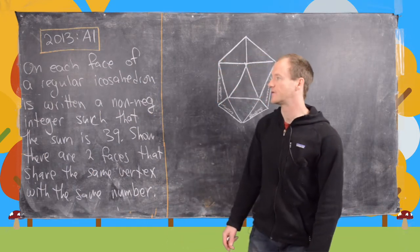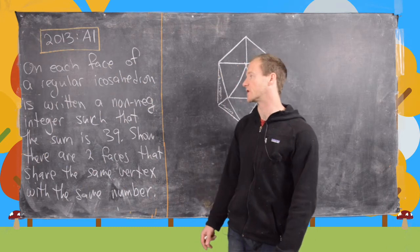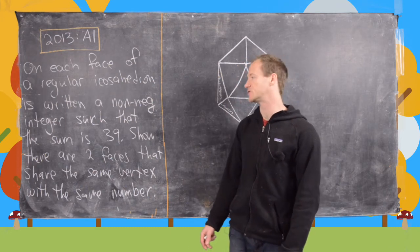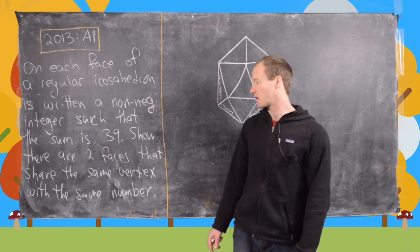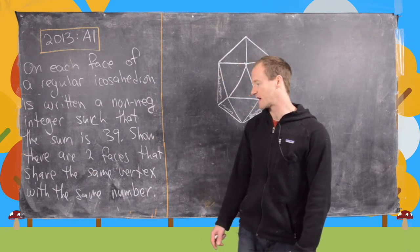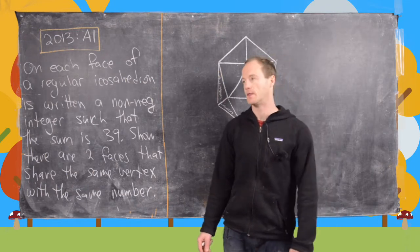It says, on each face of a regular icosahedron is written a non-negative integer such that their sum is 39. Show that there are two faces that share the same vertex with the same number written on them.